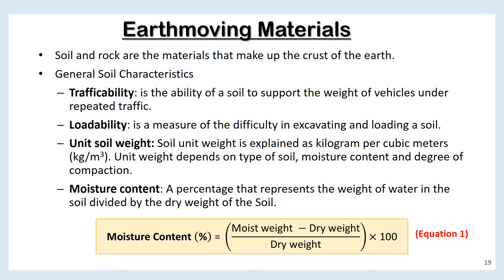Moisture content is a percentage that represents the weight of water in the soil divided by the dry weight of the soil. The formula for moisture content is as per shown in equation 1.